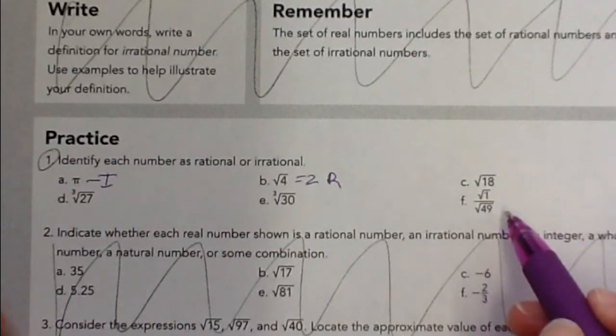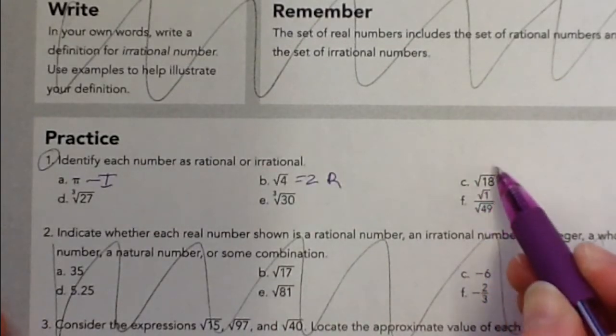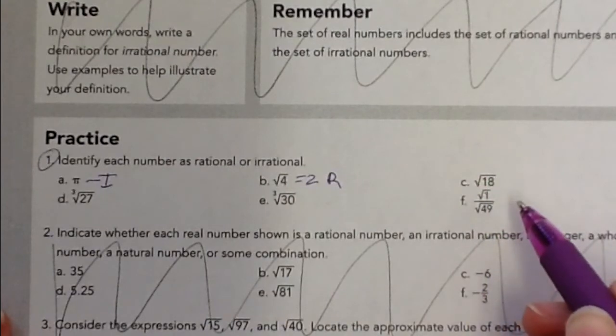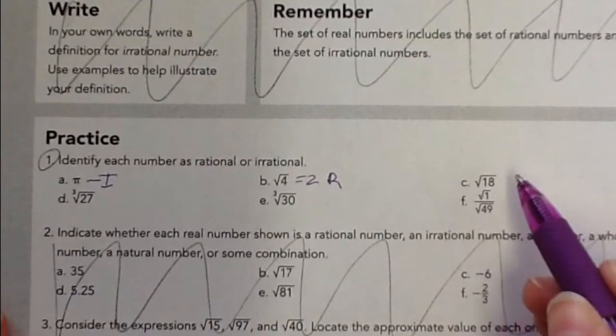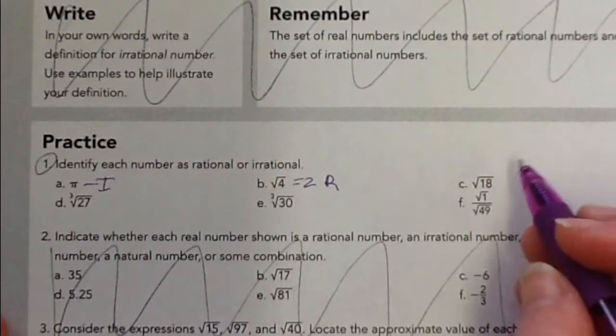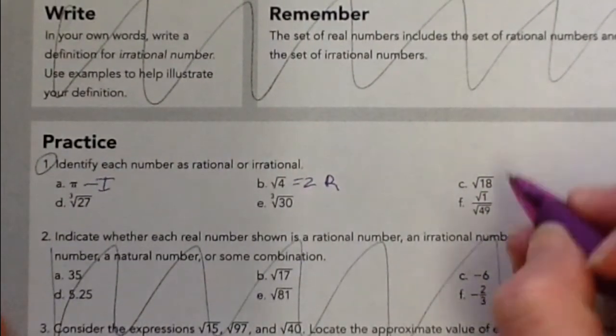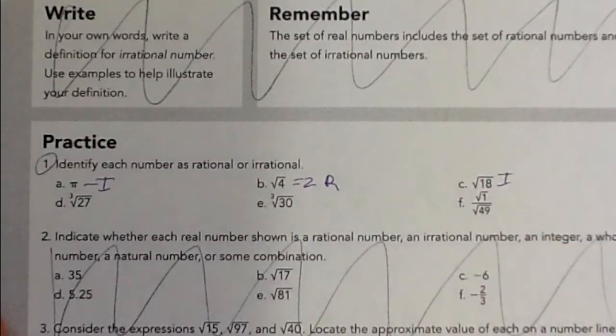C squared at 18. Well, 18 isn't going to be a perfect square. 16 is. It's very close, so I can guesstimate that this value is going to be 4 point something. But that doesn't make it rational. Those leftover decimals leave it irrational.